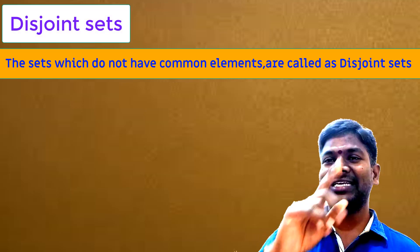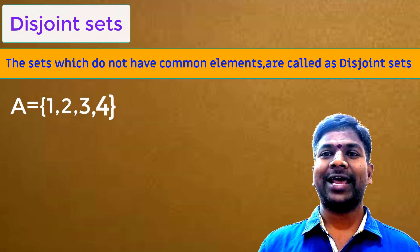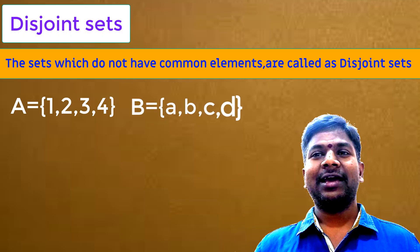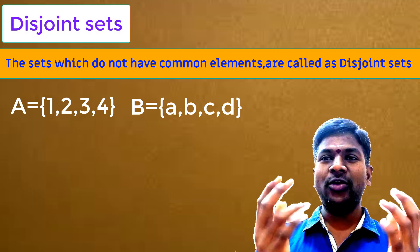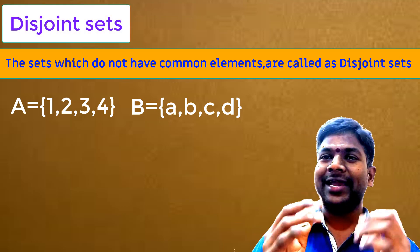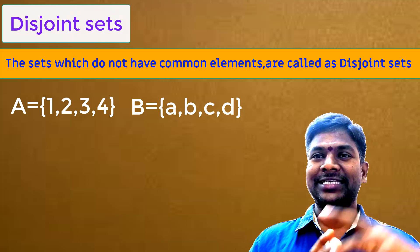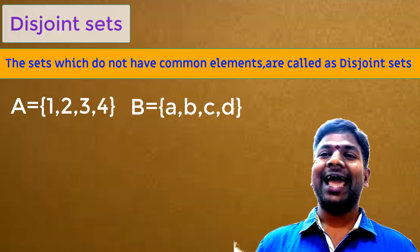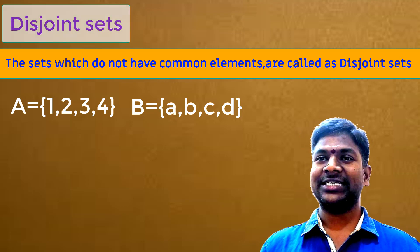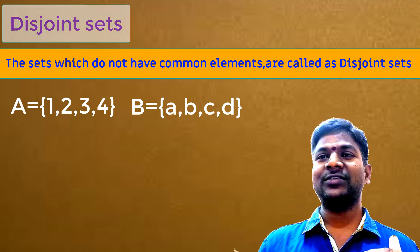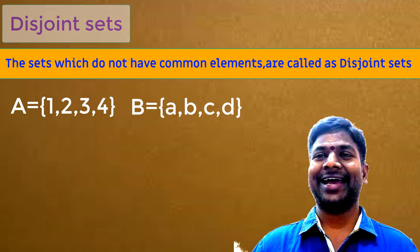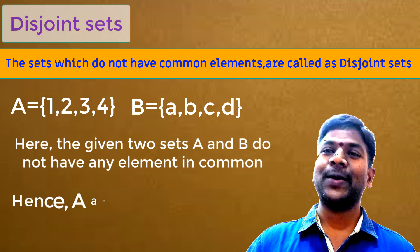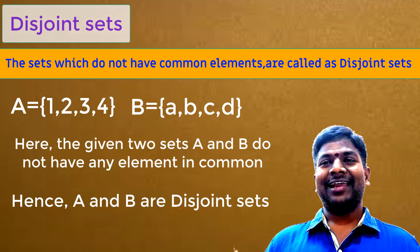Let us take a simple example. Set A = {1, 2, 3, 4} and set B = {a, b, c, d}. When you observe these two sets, set A has numbers as its elements and set B has alphabets as its elements. No element of set A is equal to any element of set B. There are no common elements to set A and set B. We obviously say A and B are disjoint sets.